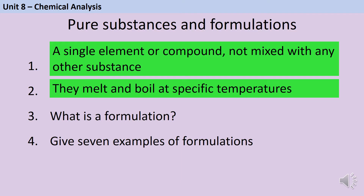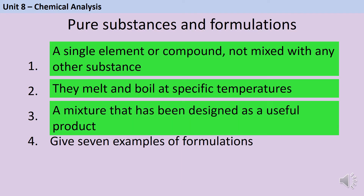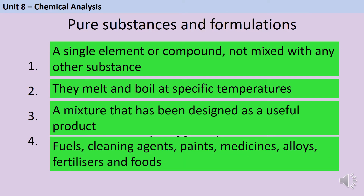A formulation is a mixture that's been designed as a useful product, and the amount of the substances in that mixture are going to be really carefully controlled. There are seven examples of formulations listed in your specification, and these are fuels, cleaning agents, paints, medicines, alloys, fertilisers, and foods.